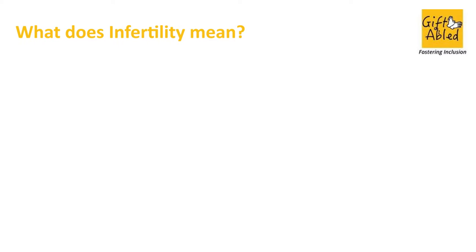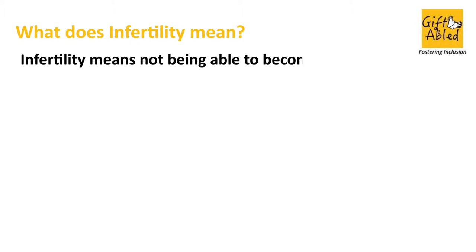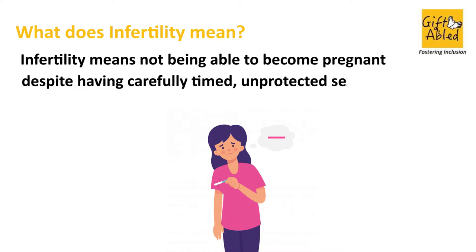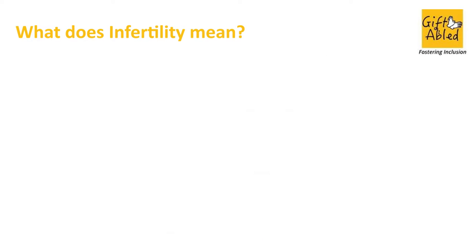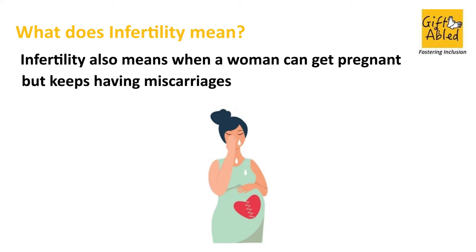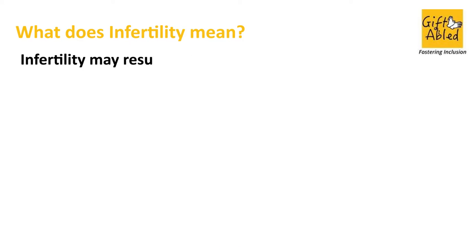Infertility — what does infertility mean? Infertility means not being able to become pregnant despite having carefully timed unprotected sex for one year. Infertility also means when a woman can get pregnant but keeps having miscarriages or stillbirths.